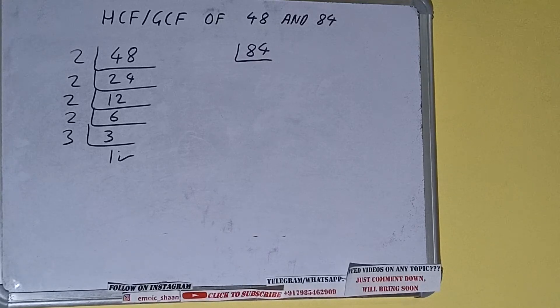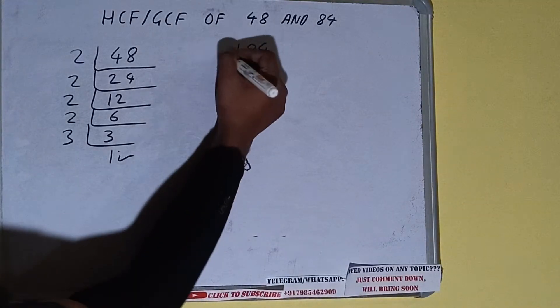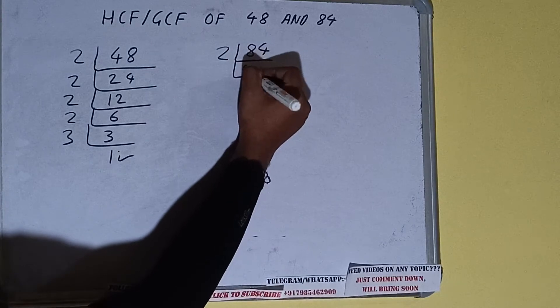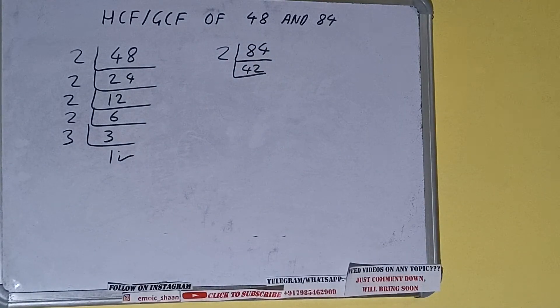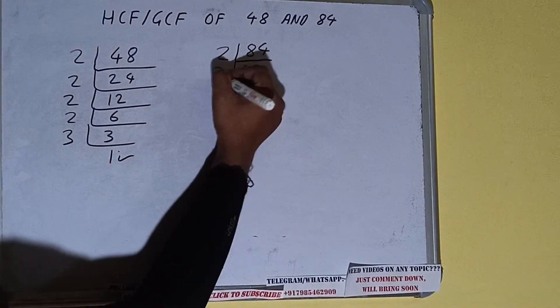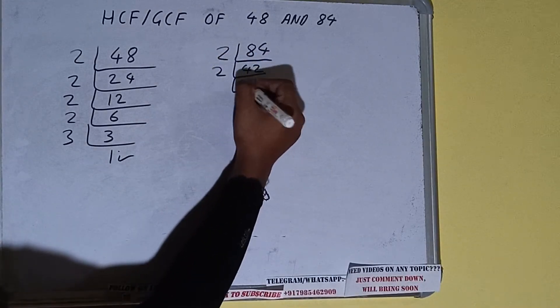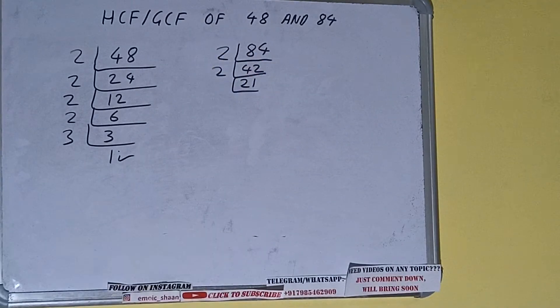We'll check with the lowest prime number, that is 2 — is 84 divisible by 2? Yes it is, so divide it and we'll be having 42. 42 is again divisible by 2 because it is an even number, and we'll be having 21.